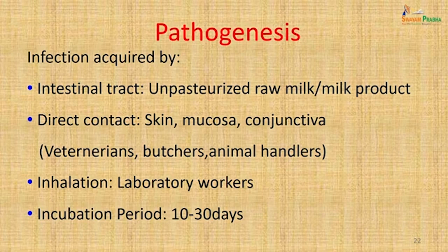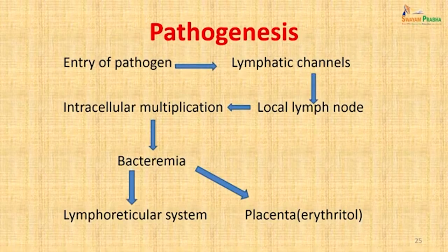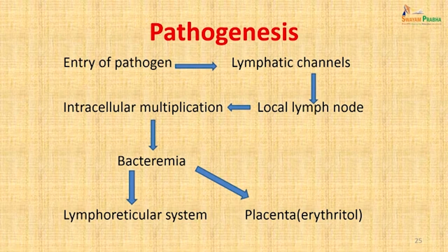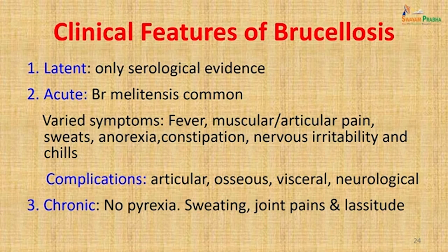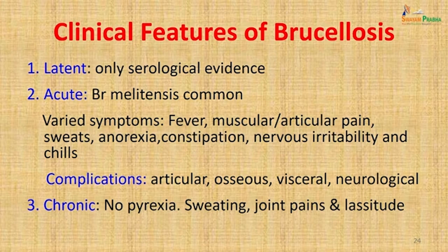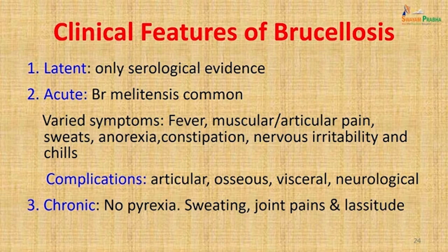Incubation period is roughly 10–30 days. The pathogen enters the lymphatic channels, travels to local lymph nodes where intracellular multiplication occurs, then enters the bloodstream causing bacteremia, and finally goes into the lymphoreticular system and placenta. Clinical features vary: latent infection with only serological evidence, acute brucellosis (more common in B. melitensis) presenting with fever, muscular or articular pain, sweats, anorexia, constipation, nervous irritability, and chills. Complications include articular, osseous, visceral, and neurological complications. Chronic brucellosis presents surprisingly without pyrexia — with sweating, joint pains, and overall lassitude.